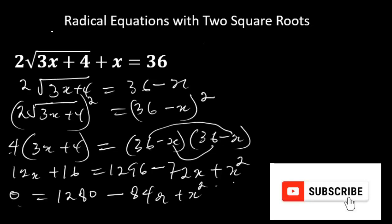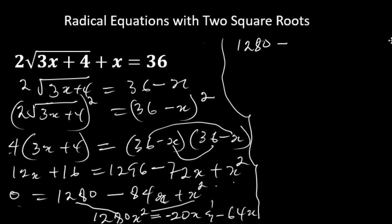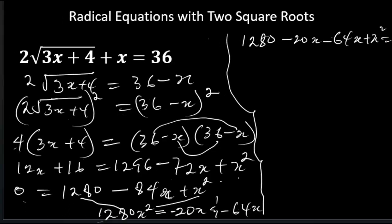Now we can factorize using the factorization method. We multiply 1280 by x squared to get 1280x squared. We need factors of 1280x squared that multiply to give 1280x squared and add to give 84x. The factors are 20x and 64x — minus 20x minus 64x sums to 84x and their product is 1280x squared. Replacing 84x in the equation: 1280 minus 20x minus 64x plus x squared equals 0.